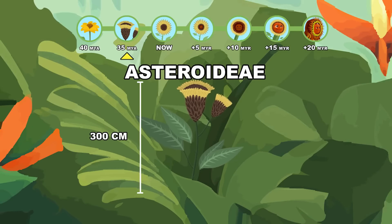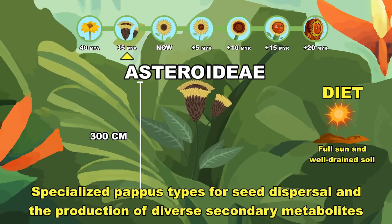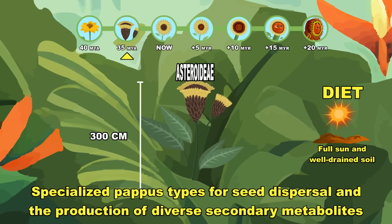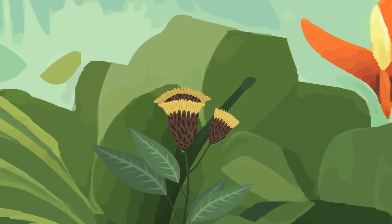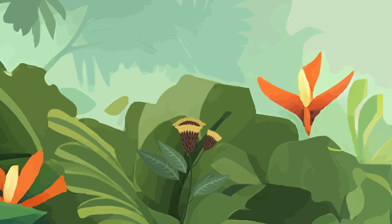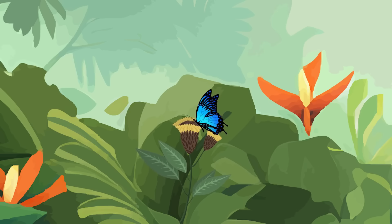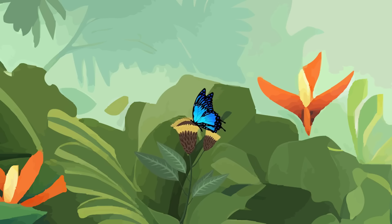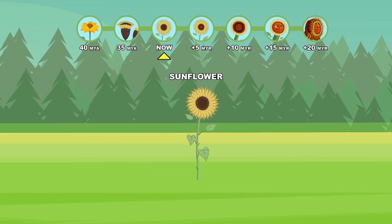Asteroideae. Specialized pappus for seed dispersal and diverse secondary metabolites. Cenozoic period.